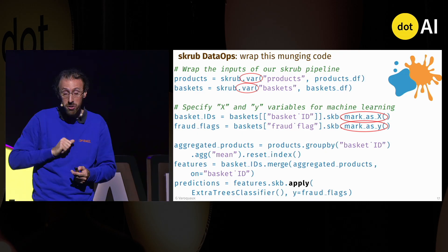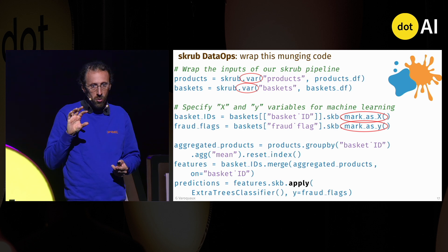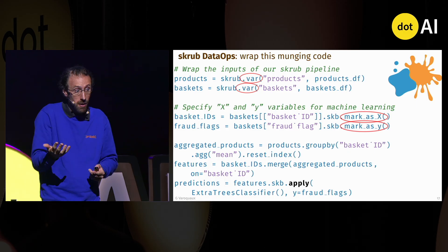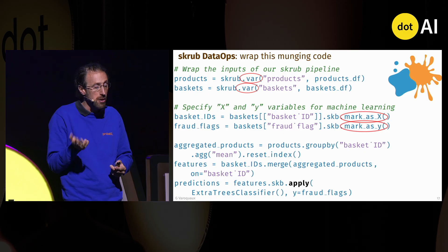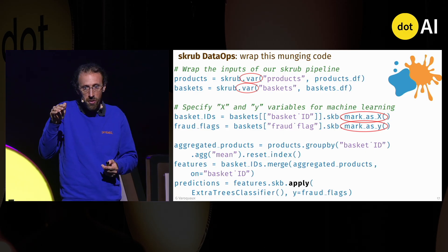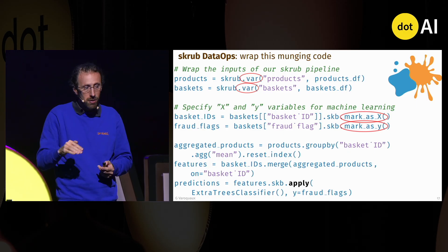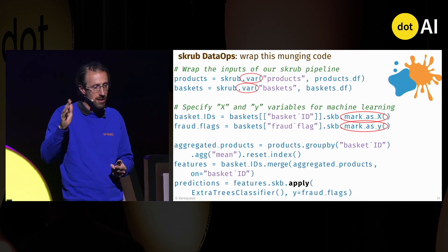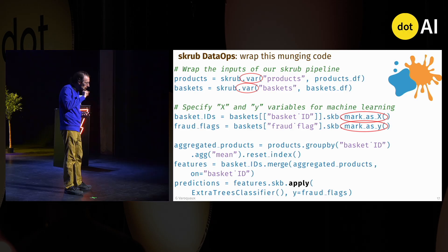Let me introduce you to Skrub DataOps. With Skrub DataOps, you take the Pandas code you typically write, except that in the beginning you define variables — a products variable wrapping a dataframe — and you label it as your X features or your Y target. Then you run almost the same exact code with an apply at the end.